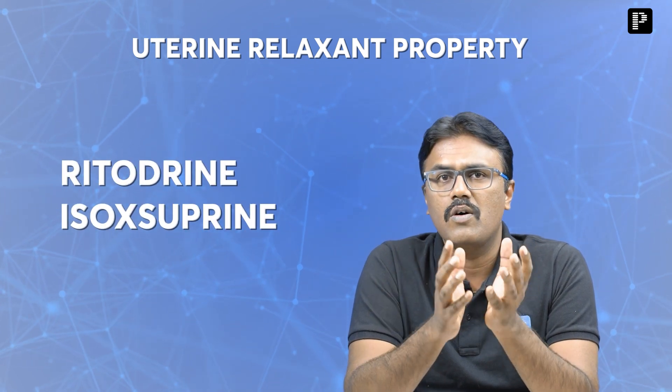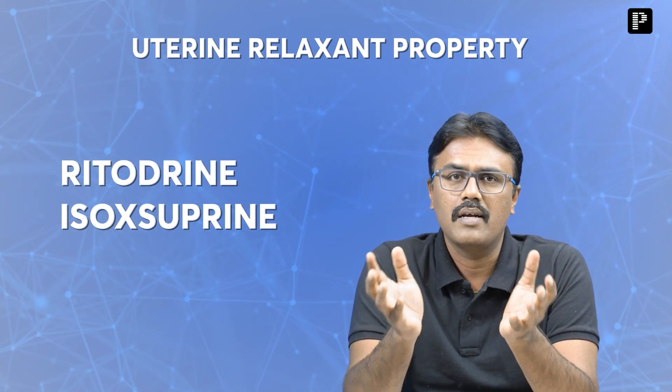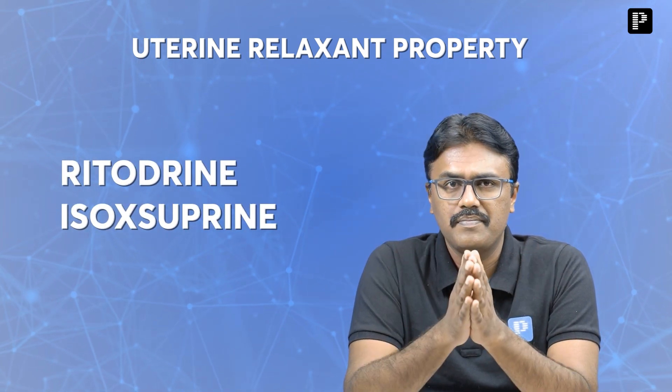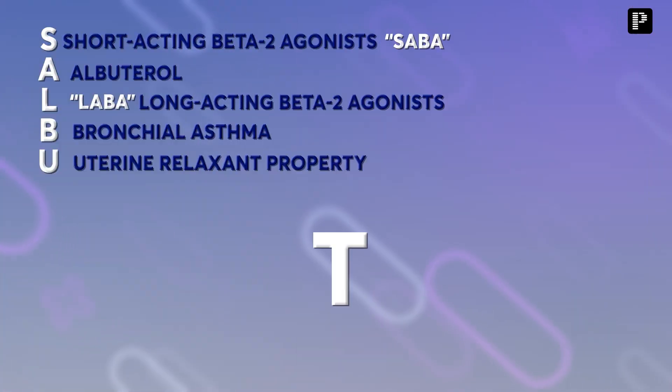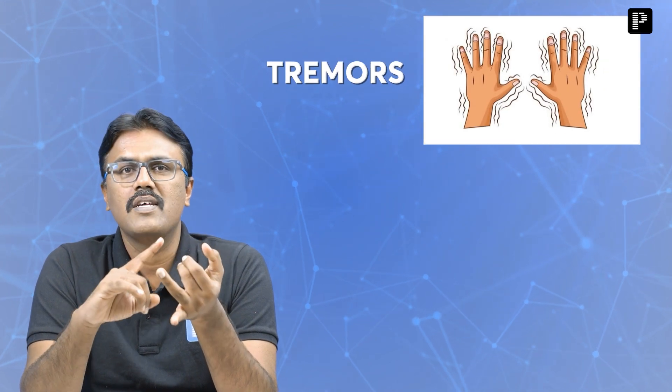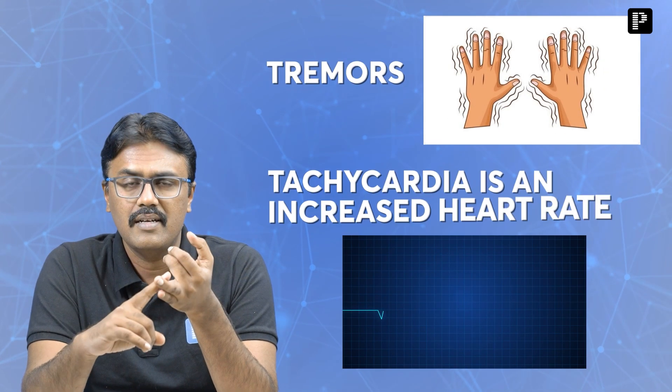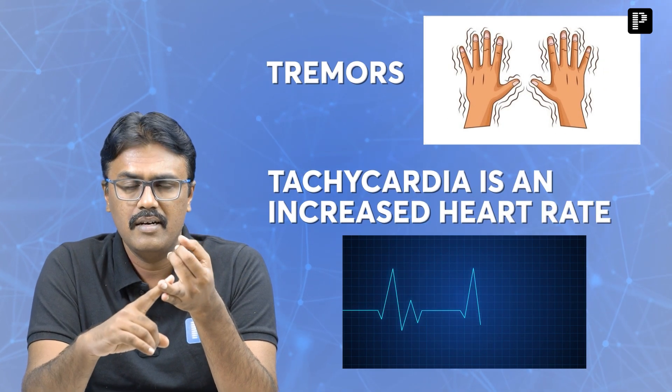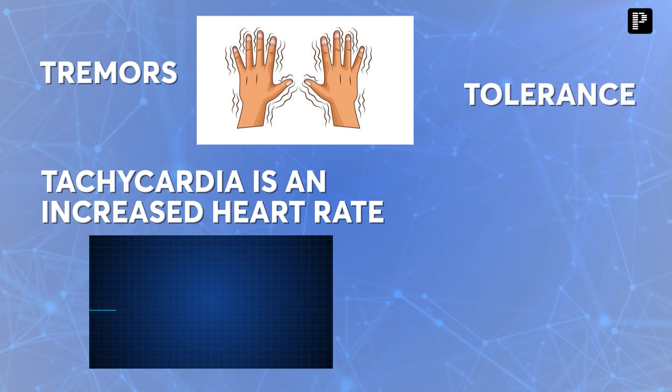Not only salbutamol — any beta-2 agonist like ritodrine and isoxsuprine also has uterine relaxant property. The next letter is T. T stands for the adverse effects seen with salbutamol: tremors, tachycardia (increase in heart rate), and tolerance.